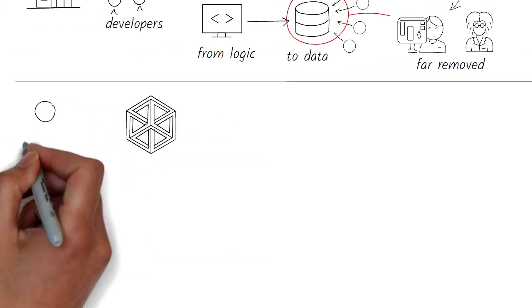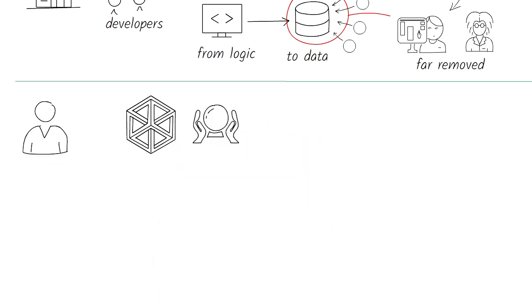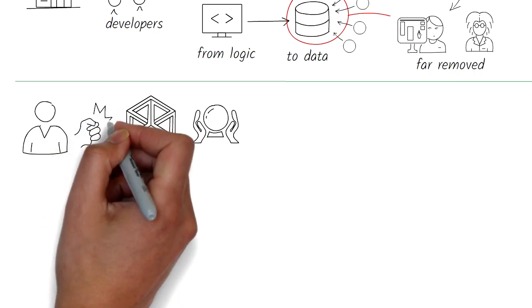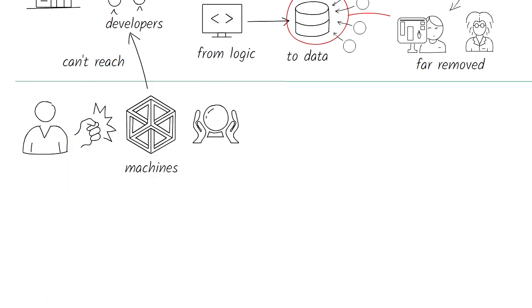In a world where machines determine our future and we have no understanding of why certain decisions are made, we might end up fighting machines and have a hard time reaching the people in charge of programming those machines.